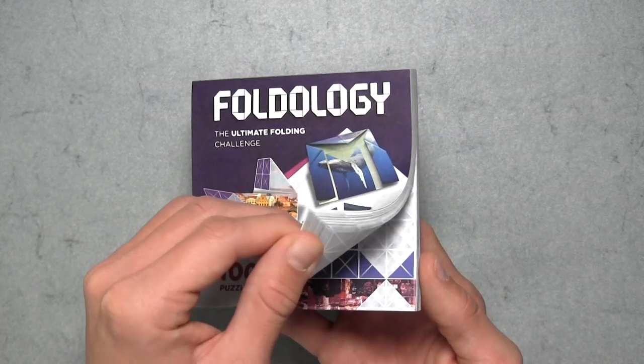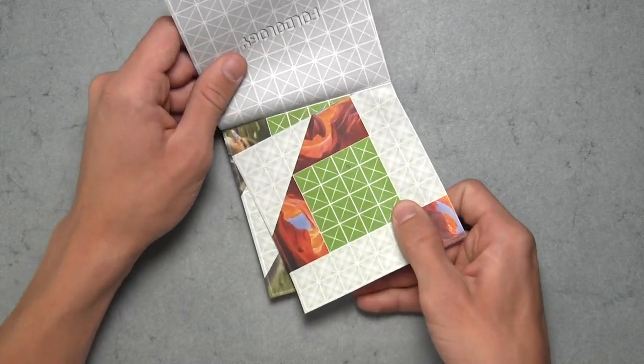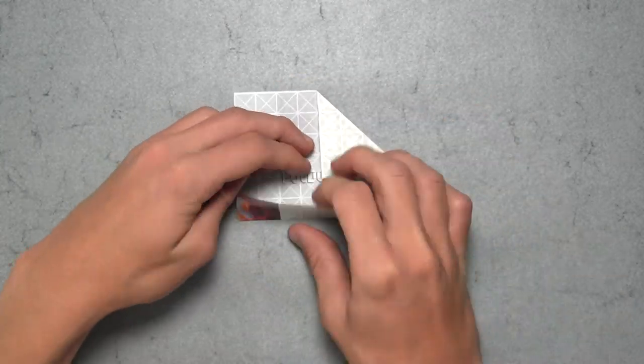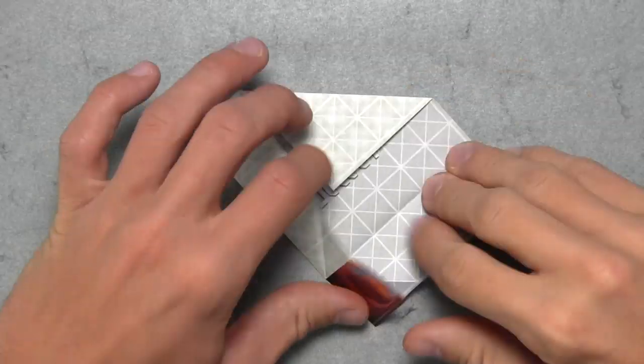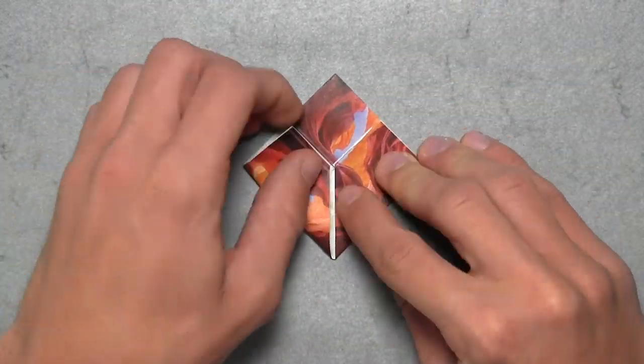Foldology is a collection of 100 folding puzzles that start out pretty simple and get progressively more complex. Each puzzle starts out as a square sheet of paper with an 8x8 grid, and the goal is to fold each puzzle into a 4x4 grid so that one side shows a dark solid color, and the other side shows a completed picture.